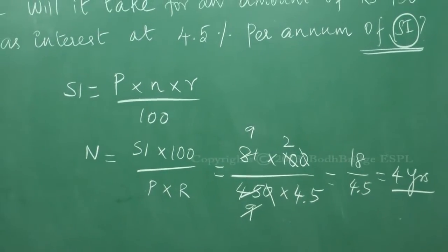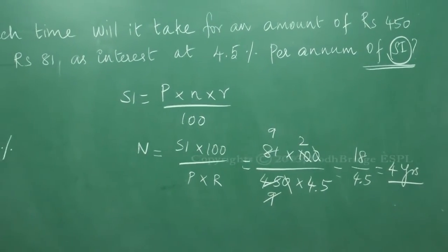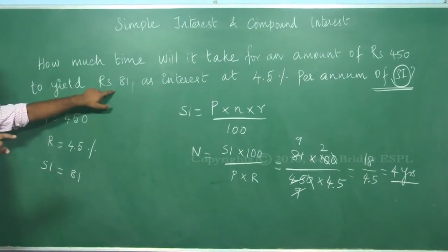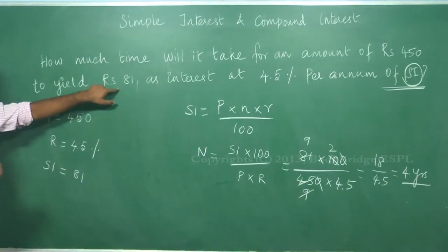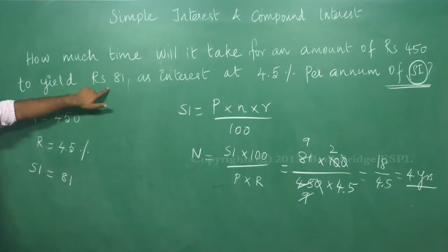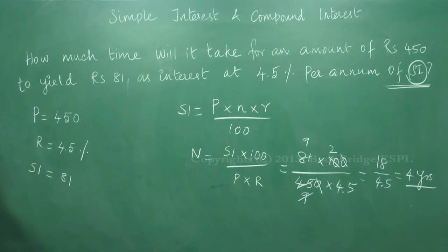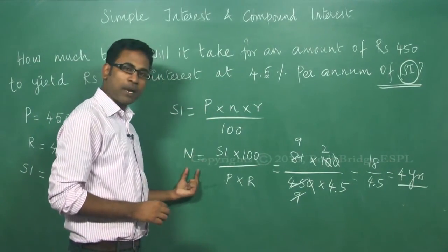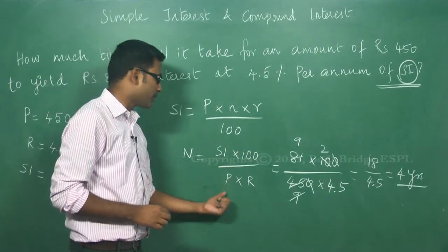In this question they are given the principal amount and the SI which occurred at 4.5 percent rate of interest in certain period. The certain period you need to find it out. Principal amount 450, rate of interest is 4.5, simple interest is 81. SI is equal to PNR by 100. We are rearranging the formula. N is equal to SI into 100 by P into R.